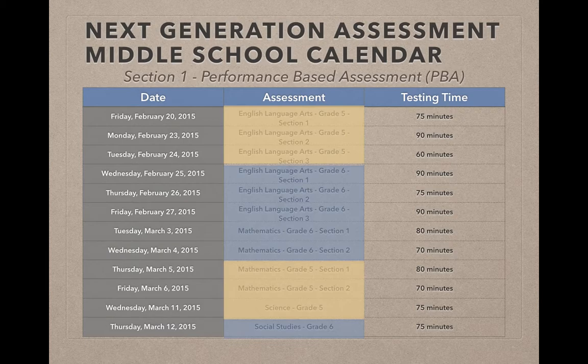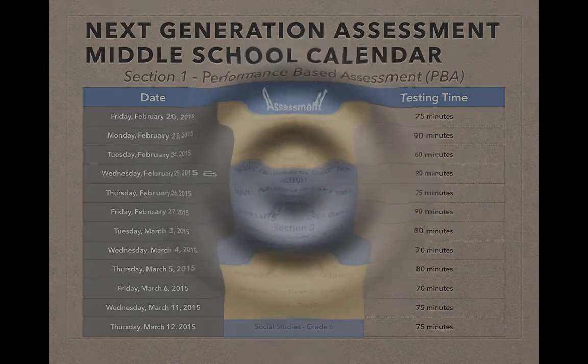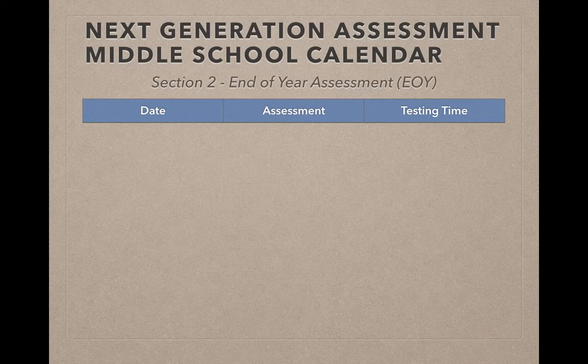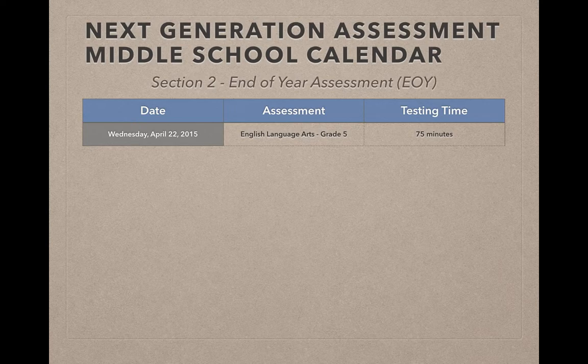From March 12th, we will take a little bit of a break from the Next Generation Assessments and come back to the End of Year Assessment, which is approximately 90% of the way through our school year. We'll start on Wednesday April 22nd with English Language Arts Grade 5. This doesn't have a section number because it is the only section — so instead of the three sections in the PBA, you'll now only have one section here.